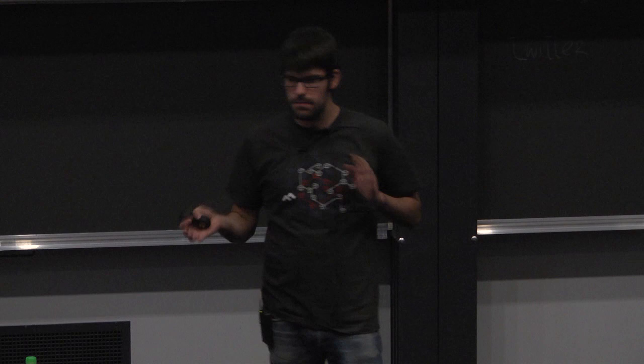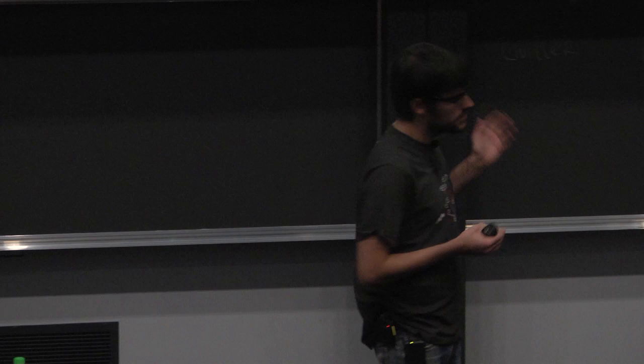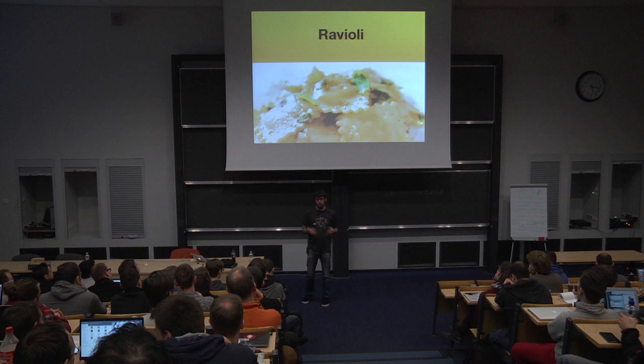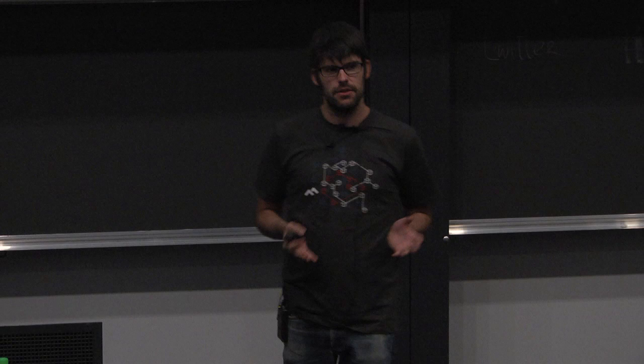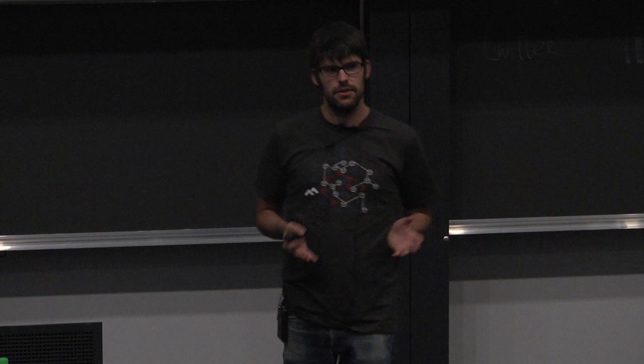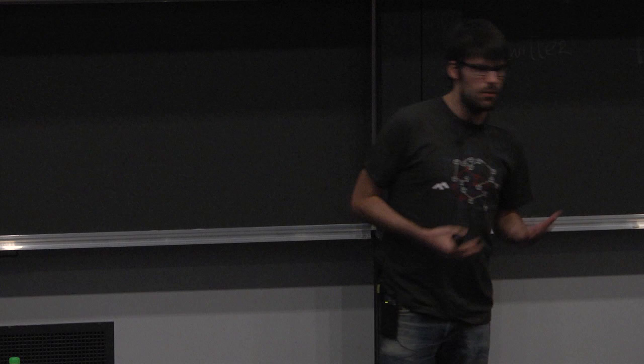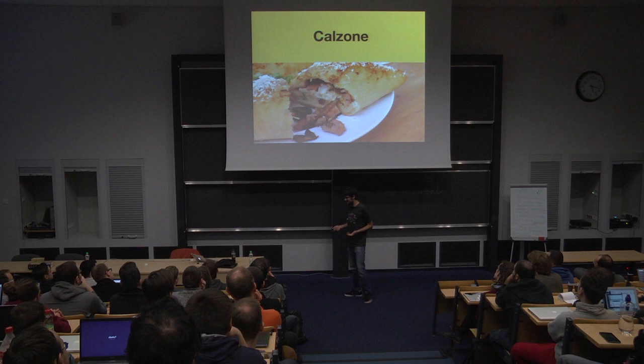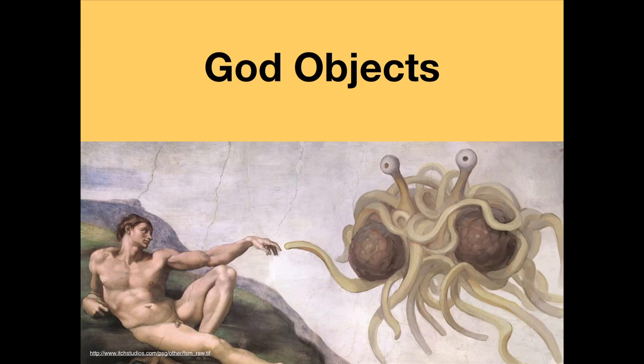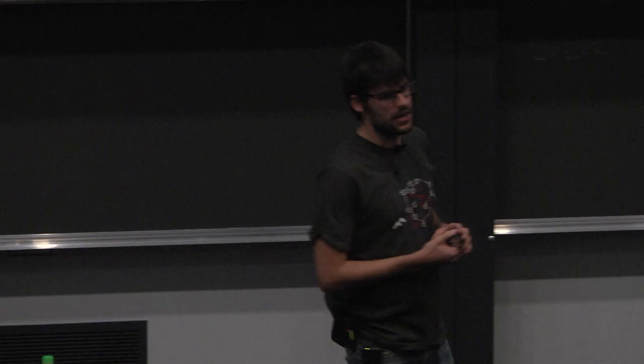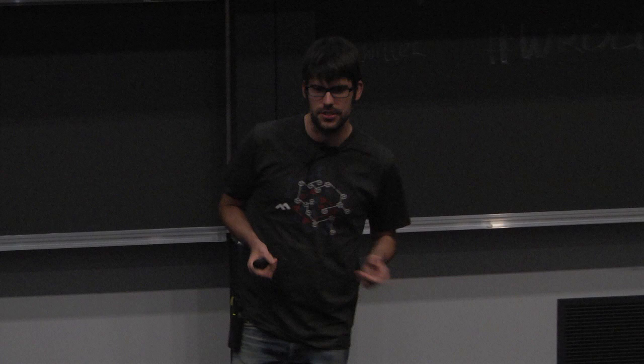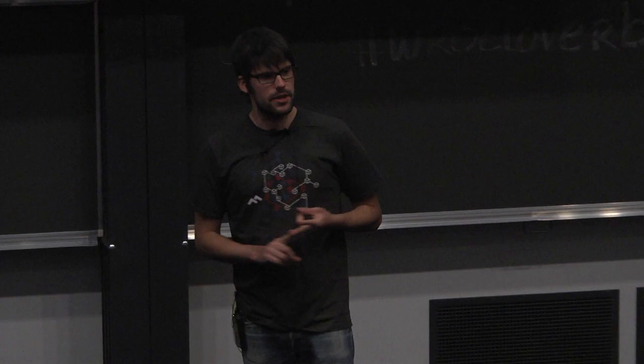So sometimes people talk about well-designed object-oriented code as ravioli code. This can have a positive or negative connotation depending on the context, but in this case, I'm going to use the positive connotation, which is that you've got independent units of code that are loosely coupled. David Cholimsky coined the phrase calzone code, and this is more like what Rails sort of leads you into. You can only really consume one calzone and you're not going to feel very good after you're done.